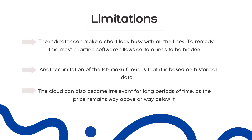Limitations of using the Ichimoku Cloud: the indicator can make a chart look busy with all the lines. However, most charting software allows certain lines to be hidden. For example, all of the lines can be hidden except for Leading Span A and Leading Span B, which create the cloud. Each trader needs to focus on which lines provide the most information, then consider hiding the rest if all of the lines are distracting. Another limitation is that the Ichimoku Cloud is based on historical data. While two of these data points are plotted in the future, there is nothing in the formula that is inherently predictive — averages are simply being plotted into the future. The cloud can also become irrelevant for long periods as the price remains way above or way below it. At times like this, the conversion line, the baseline, and their crossovers become more important as they generally stick closer to the price.